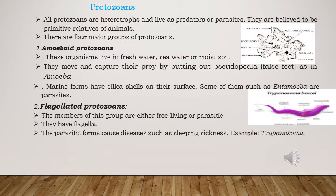Let us start with the next group, which is protozoans. Protozoans are heterotrophs and live as predators or parasites. These are the primitive relatives of animals because they act as predators. The four main groups of protozoans are amoeboid, flagellate, ciliated, and sporozoic.